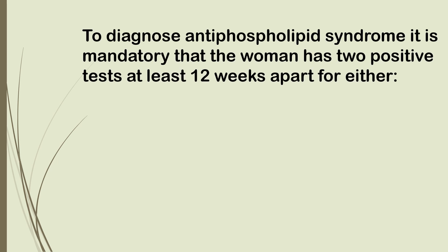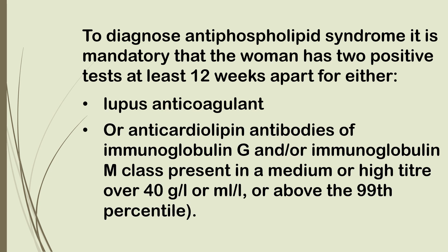it is mandatory that the woman has two positive tests at least 12 weeks apart for either lupus anticoagulant or anti-cardiolipin antibodies of immunoglobulin G and/or immunoglobulin M class present in a medium or high titer over 40 g/L or mL/L or above the 99th percentile.